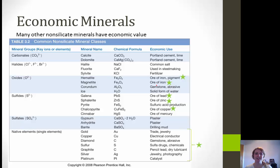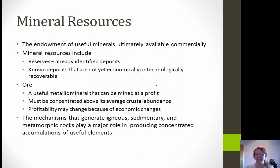Now talking about economic minerals: many other non-silicate minerals have economic value. We have hematite — an ore of iron typically used as a pigment; magnetite — also an ore of iron and it's magnetic; corundum — a gemstone and also an abrasive used in sandpaper; ice — the solid form of water; galena — the state mineral of Missouri and an ore of lead; sphalerite — an ore of zinc; pyrite — used in sulfuric acid production; and chalcopyrite — an ore of copper. Then we have all of the native elements: gold, copper, diamond, sulfur, graphite, silver, and platinum.